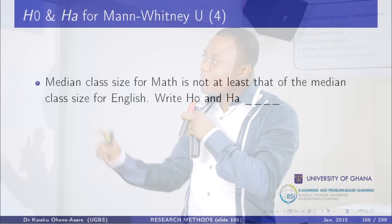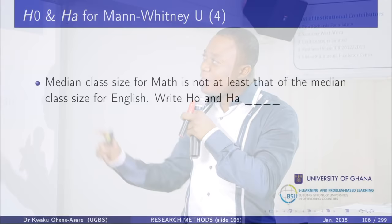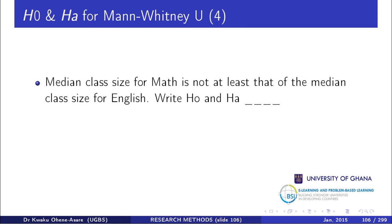Now try: the median class size for Math is not at least that of the median class size for English. The null hypothesis is M1 greater than or equal to M2, and the alternative is M1 less than M2.